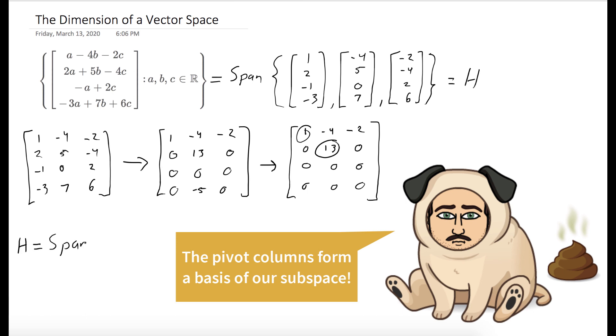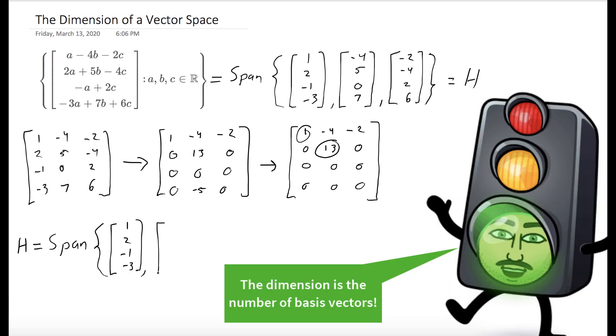So another way to say that is our subspace is equal to the span of these two vectors. In fact, this is a linearly independent set. So it's a basis. And now to find the dimension of this vector space, all you have to do is count the number of vectors in the basis. And so it's two.